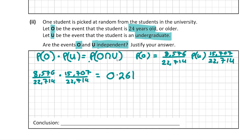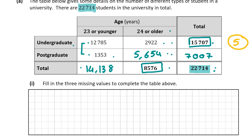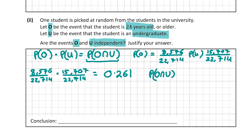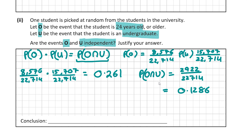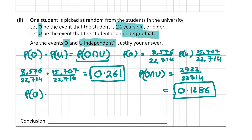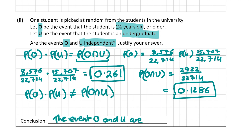Now let's work out the right-hand side, P(O ∩ U): the probability that a student is 24 years old or older and is an undergraduate. We take this figure from the table: 2,922, over the total of 22,714. That gives us 0.1286. These two values are not the same, so P(O) × P(U) does not equal P(O ∩ U). Conclusion: the events O and U are not independent. This question is worth 10 marks.